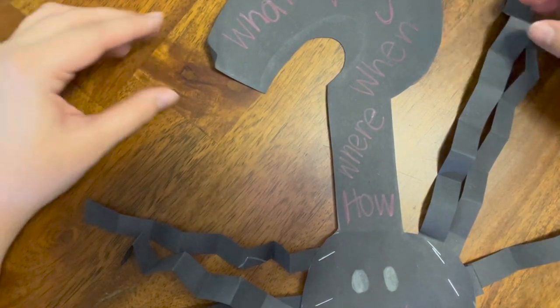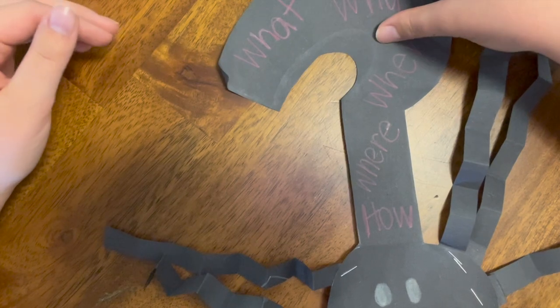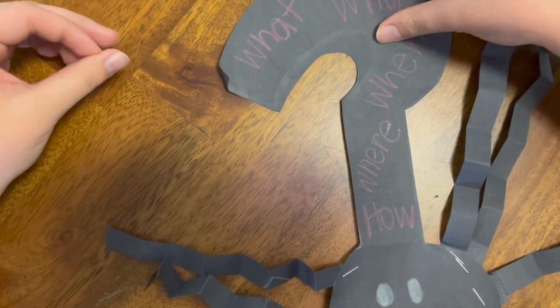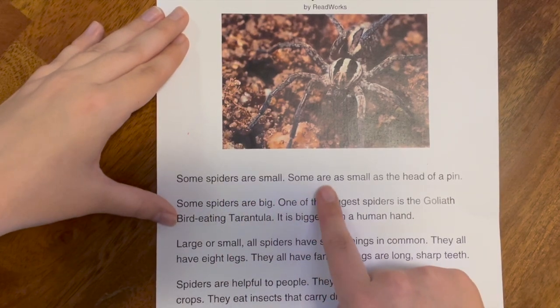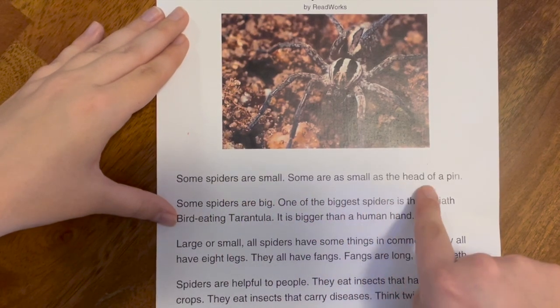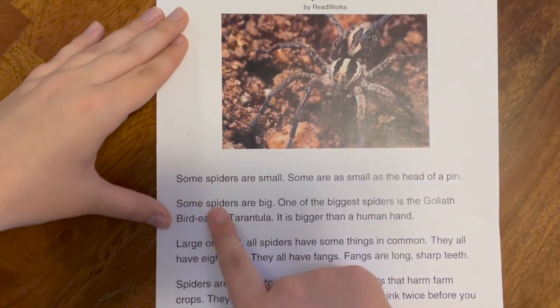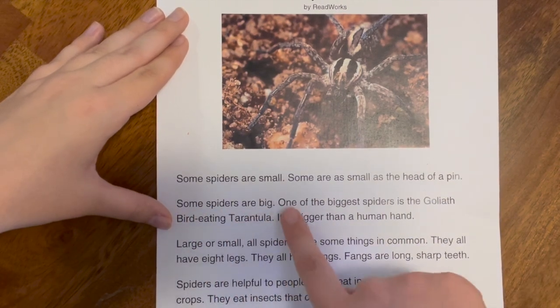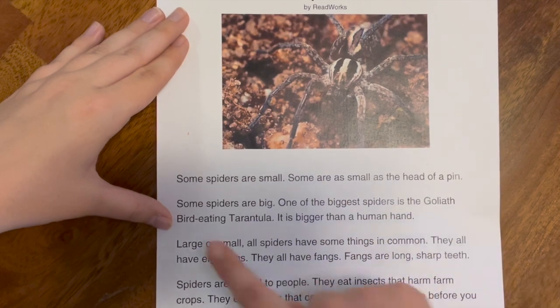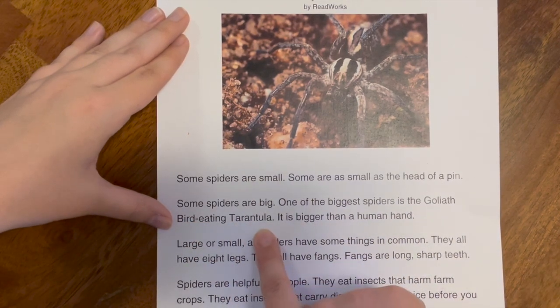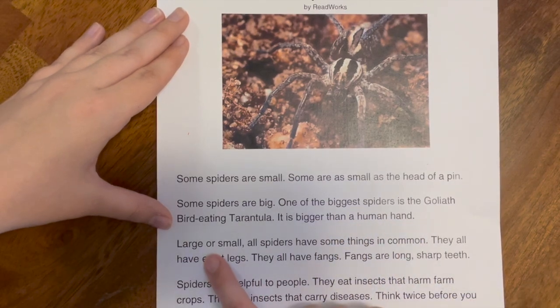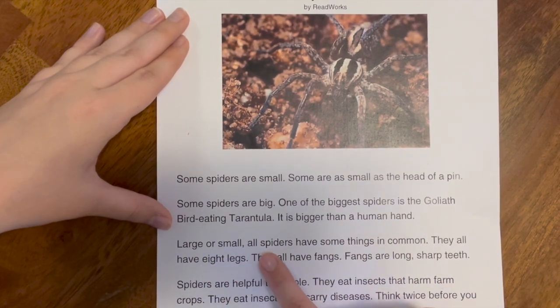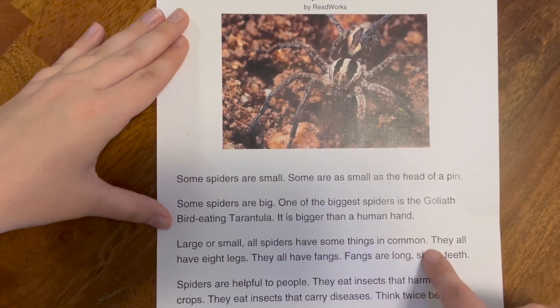So now we are going to set our question buddy aside and we are going to read Spiders by ReadWorks. Some spiders are small. Some are as small as the head of a pin. Some spiders are big. One of the biggest spiders is the goliath bird eating tarantula. It is bigger than a human hand. Large or small, all spiders have some things in common. They all have eight legs.